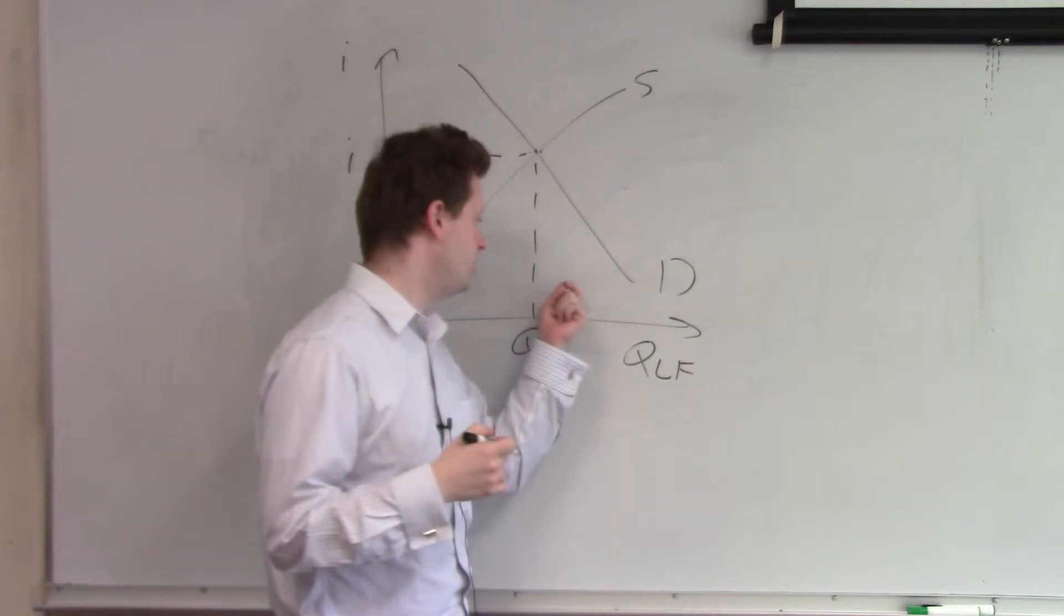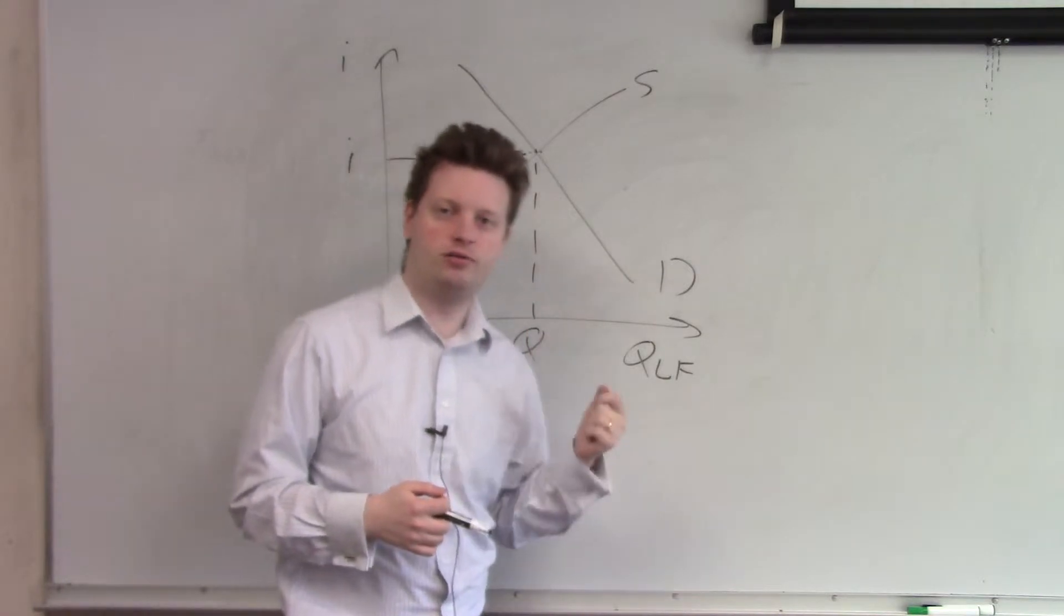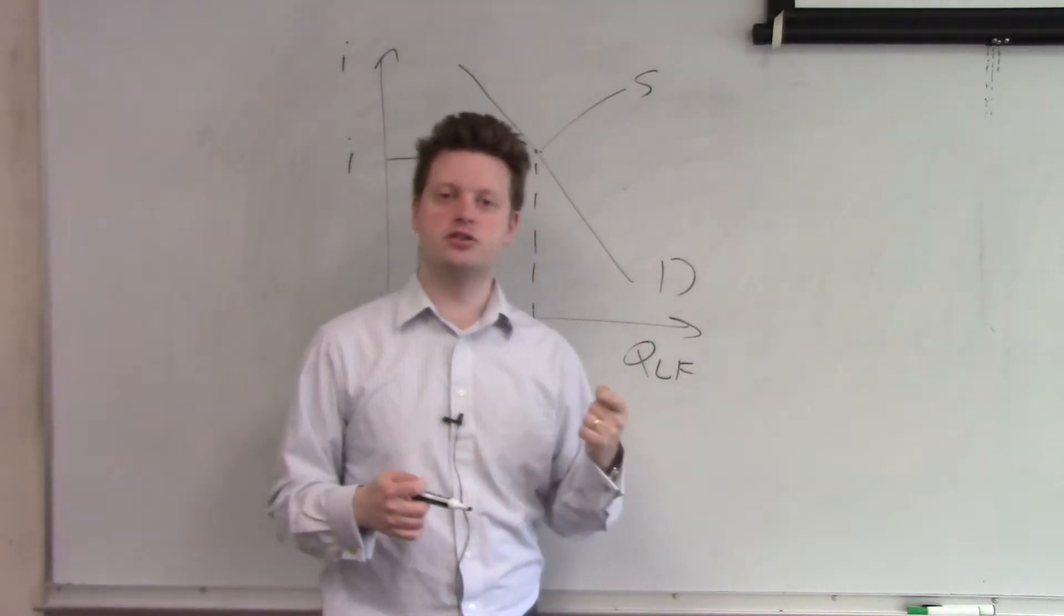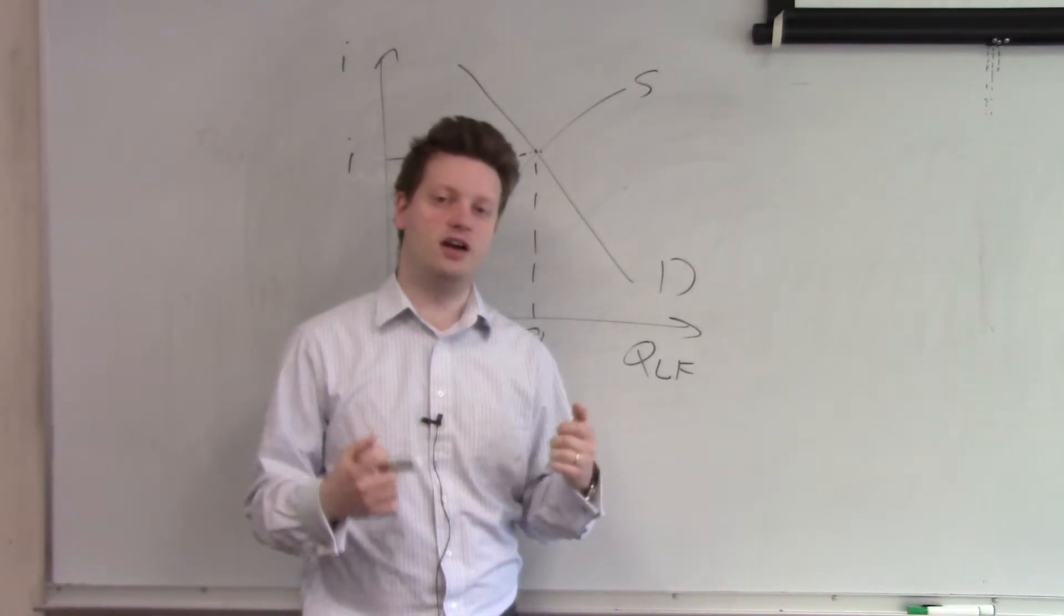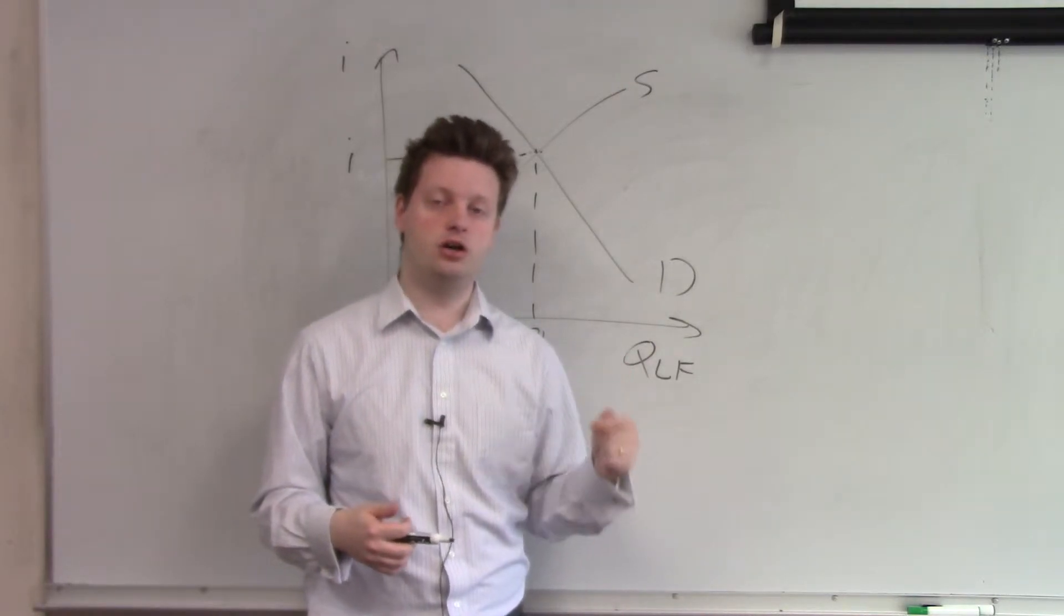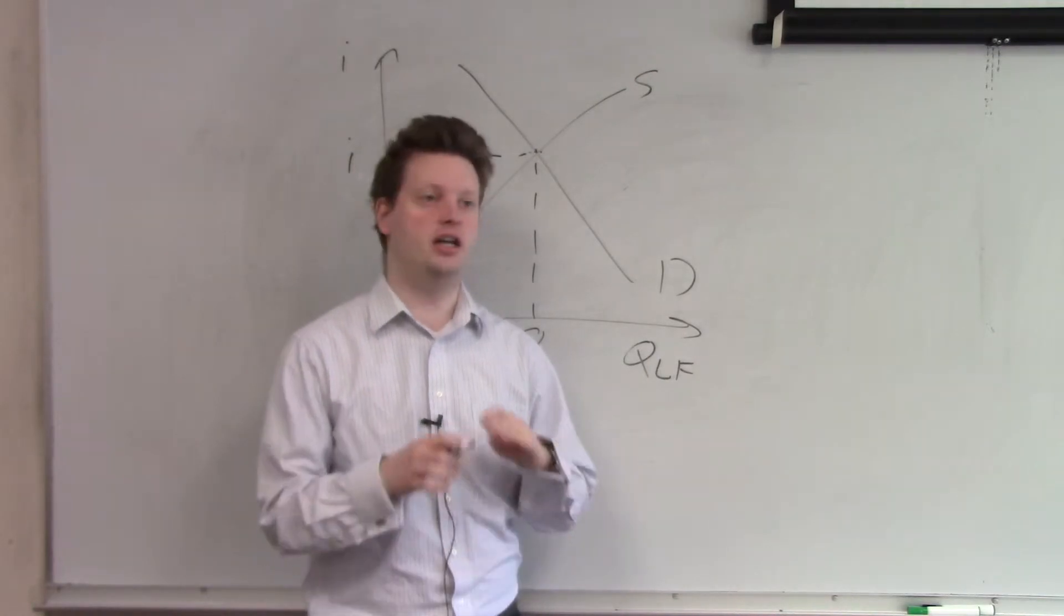This implies that the government is not part of this market directly. However, we know one specific feature of the government. The government is assumed to have the safe asset, which means if I want to save, I first give my money to the government. Because I know if I give my money to the government, I get my return and it's secure.